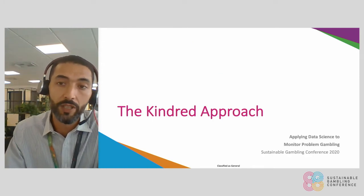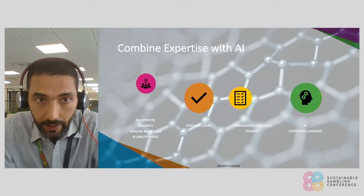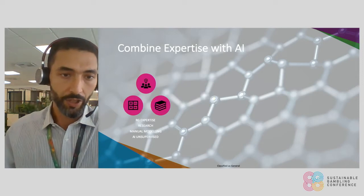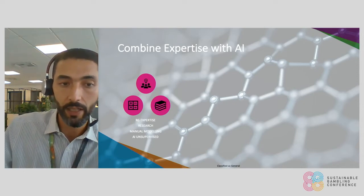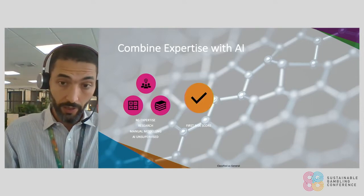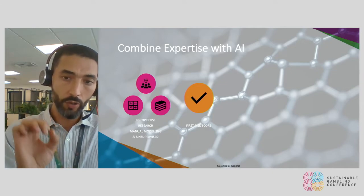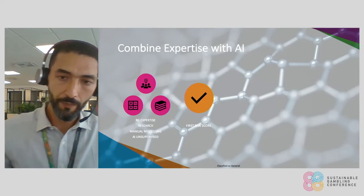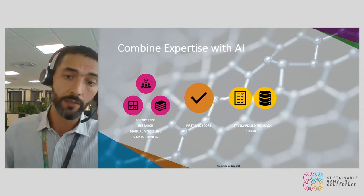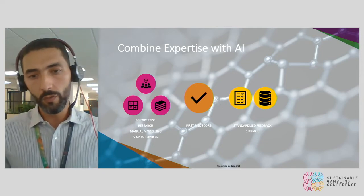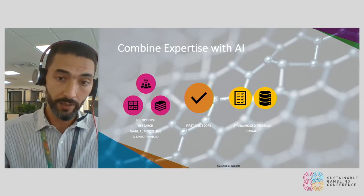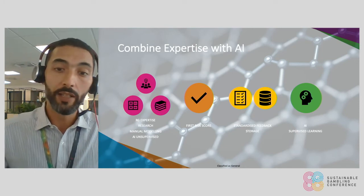So what was Kindred's approach? We decided to mix expertise with AI. The first step was to look at hard expertise, research, manual modeling, and unsupervised AI — mixing all of that together to come up with a first score, which is actually what was used in the color-coding example with the 48 data points shown earlier. The aim is to provide that to the RG team, who will then take action on accounts at high risk, review the cases, provide feedback on whether the scoring is right or wrong, and store that, so that at a later stage we can apply AI supervised learning.